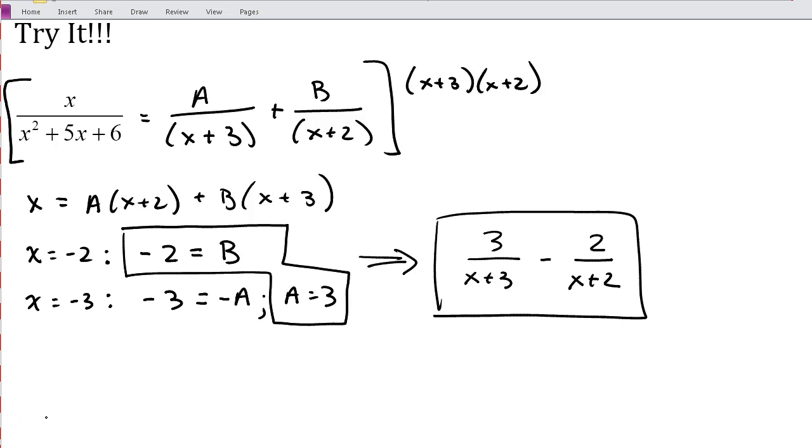Okay, so hopefully you got 3 over x plus 3 minus 2 over x plus 2. Sometimes you'll have these in a different order, depending on where you put your factors in your denominator. But if you had this switched around, you would have negative 2 over x plus 2 plus 3 over x plus 3. We want to factor our denominator to x plus 3 and x plus 2. And then when we get rid of those denominators by multiplying through by x squared plus 5x plus 6 factored out, we end up with this step here.